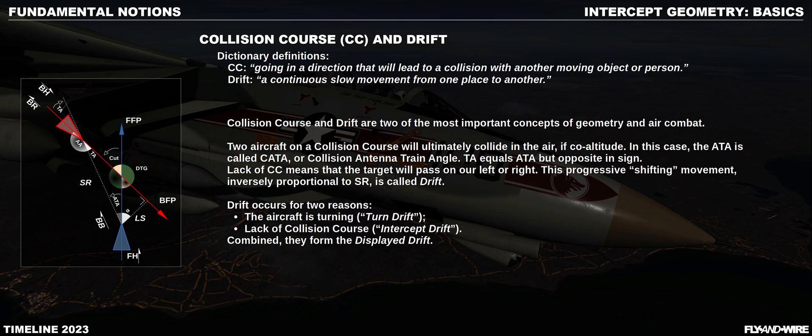The collision course has been mentioned earlier, but it's one of the magic concepts that must become second nature. Drift is, concept-wise, somewhat like the opposite of CC. When on collision, the fighter and the bogey do not move away from each other's relative position in space, and ultimately they will collide if co-alt. If the two aeroplanes are not on CC, then looking from the fighter's perspective, we will notice the bogey moving left or right. This continuous and progressive movement, inversely proportional to range, is called drift. Simply put: when there is CC, there is no drift, and vice versa.